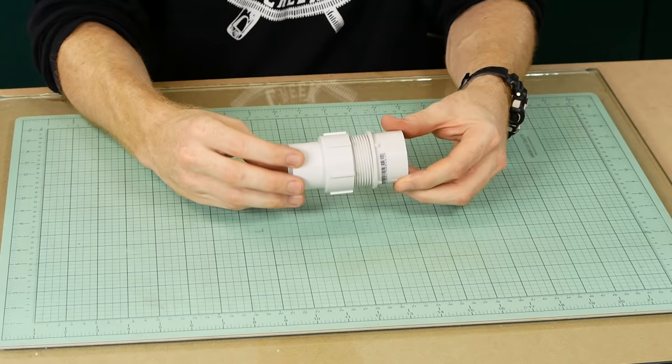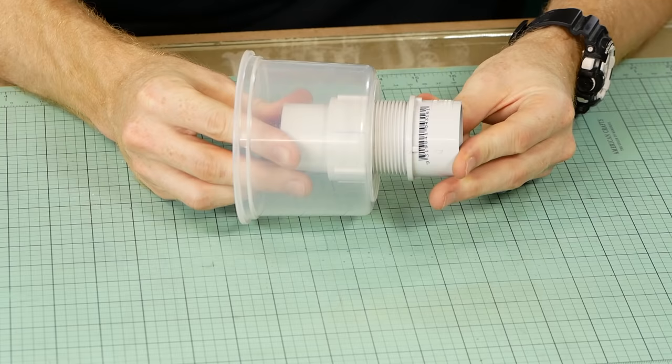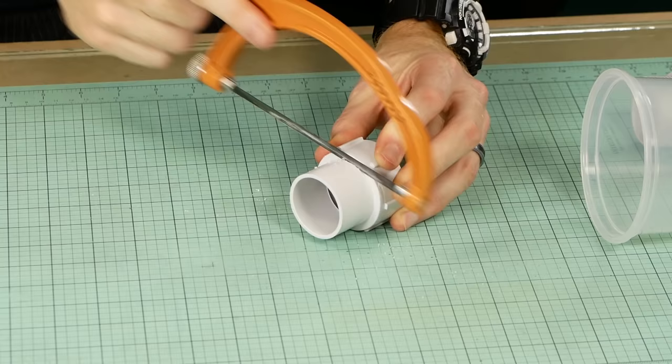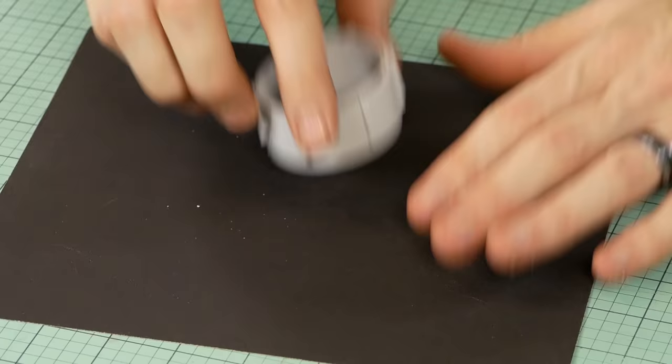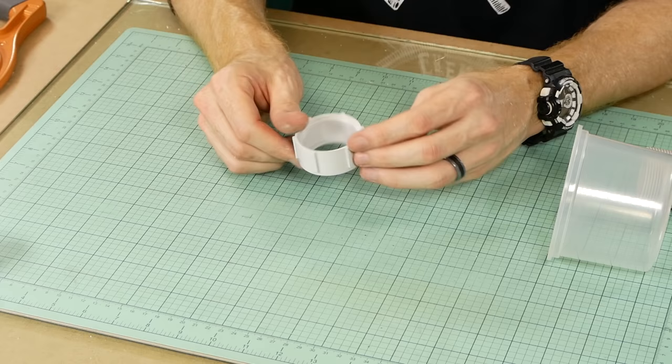The connection between the handle and the container that holds the static grass is made using the two pipe connectors. The only modification I'll make is to remove the excess from this piece. PVC pipe is quite easy to cut, so a small hacksaw is all that's needed to get the job done.